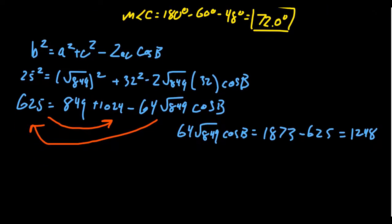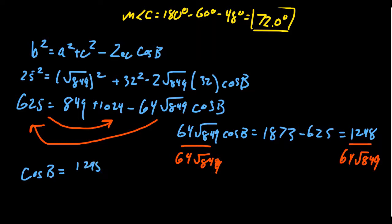Next, we're going to divide both sides of the equation by 64 times the square root of 849. Again, we're keeping the square root as long as possible so we don't get any rounding errors here. That should be 849 right there. 849 as well. And so then we get cosine of B is equal to 1248 over 64 times the square root of 849. We can simplify that fraction if possible. It turns out that 32 does go into 1248 39 times.